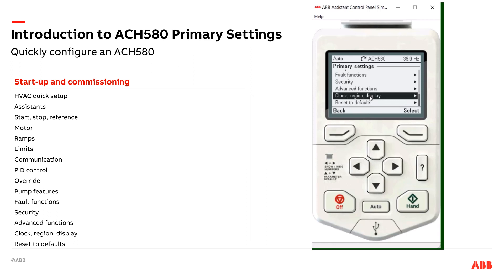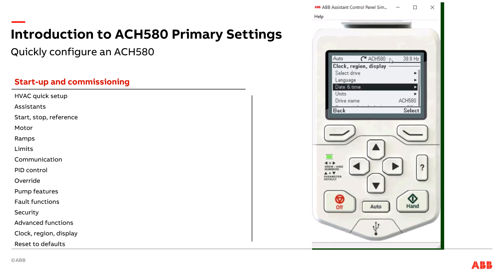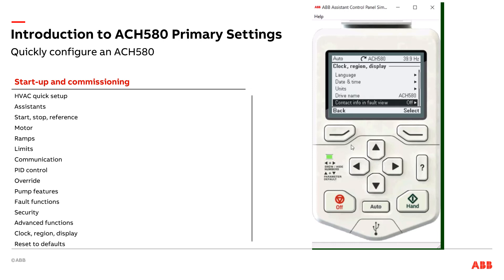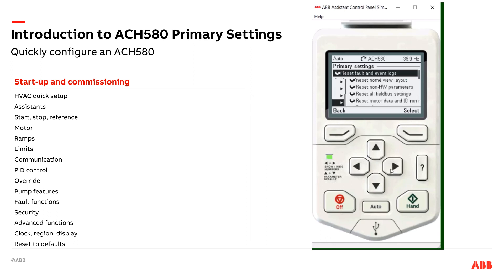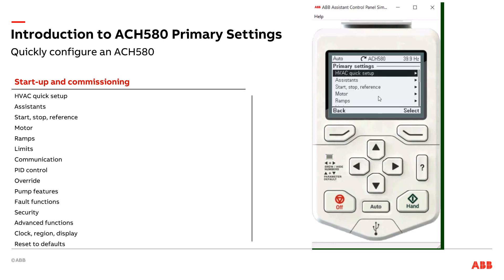Lastly, there's the clock, region, and display. I can set up my real-time clock in the drive and also name the drive — you can see it's currently called ACH580, but I can customize it to something like 'chilled water pump 2' or 'CHWP-2.' If someone got in there and was fat-fingering a bunch of things, I do have the ability to reset the drive all the way to factory defaults in this setting. So what I just did is scroll through the primary settings of the ACH580 to give you a quick introduction. Most of the time I'll live in the HVAC quick setup, which we have a separate video on. Check that out if you haven't seen it — but if you want to see the full breadth of the drive's primary settings capability, that's what we just went through. Thank you.